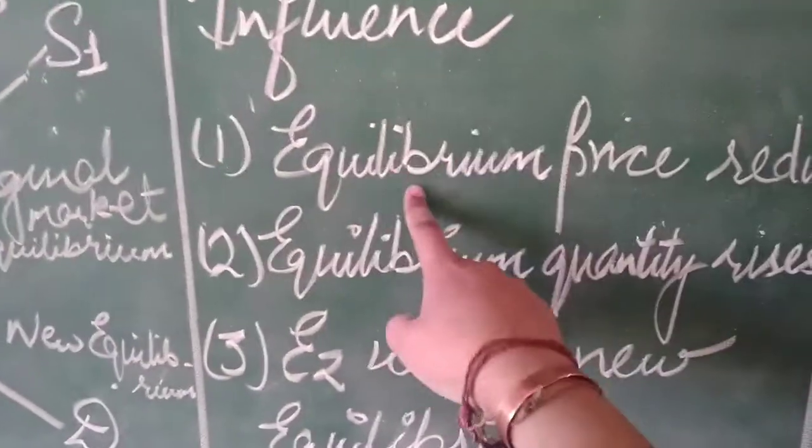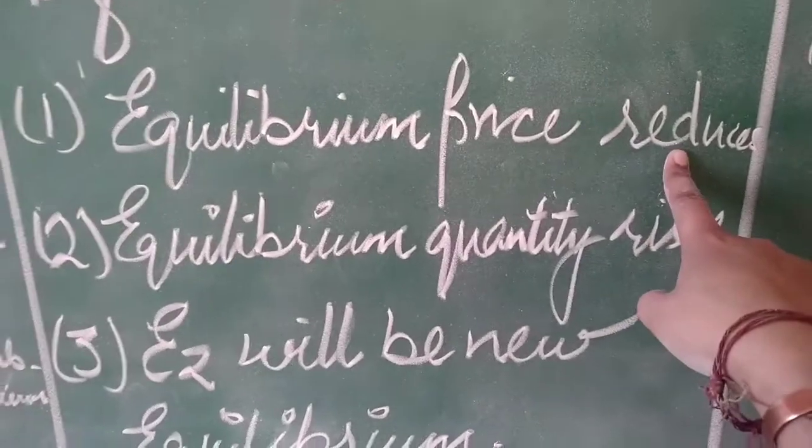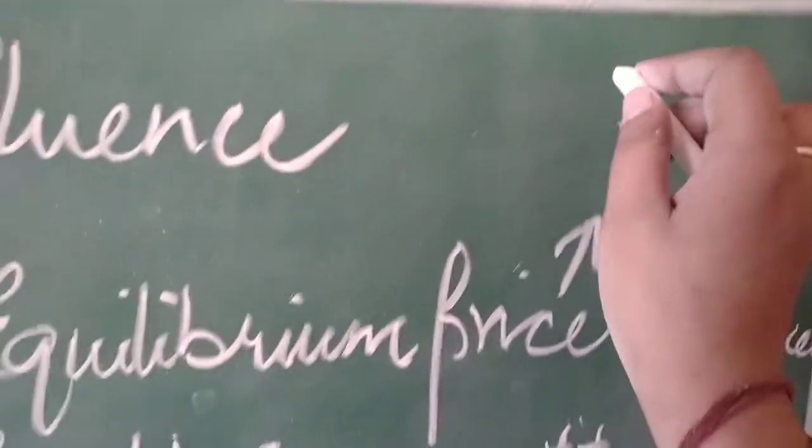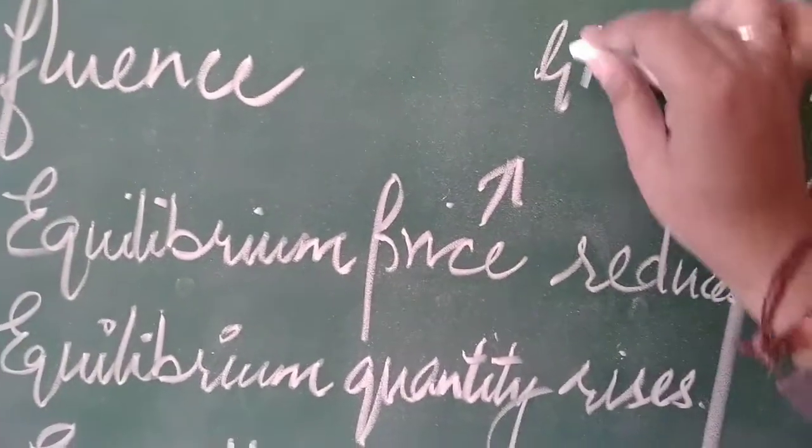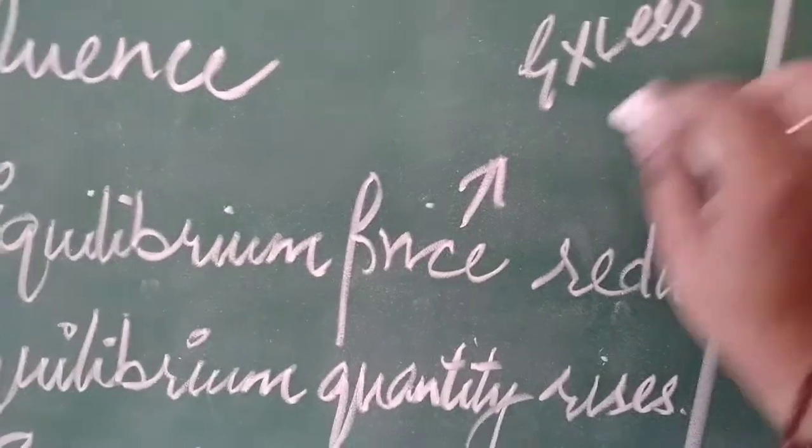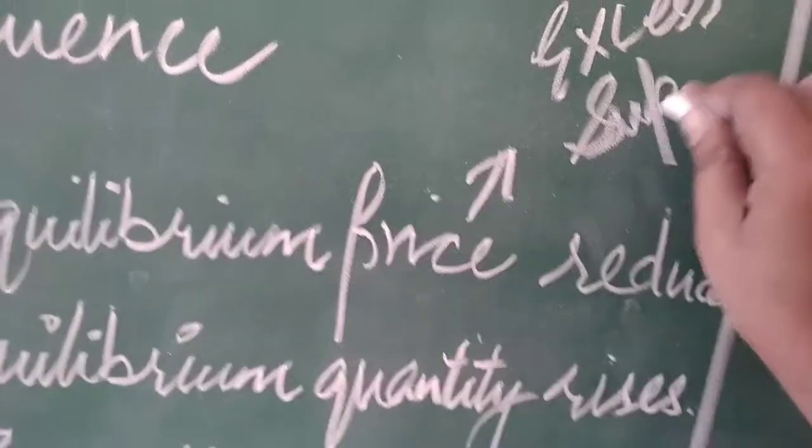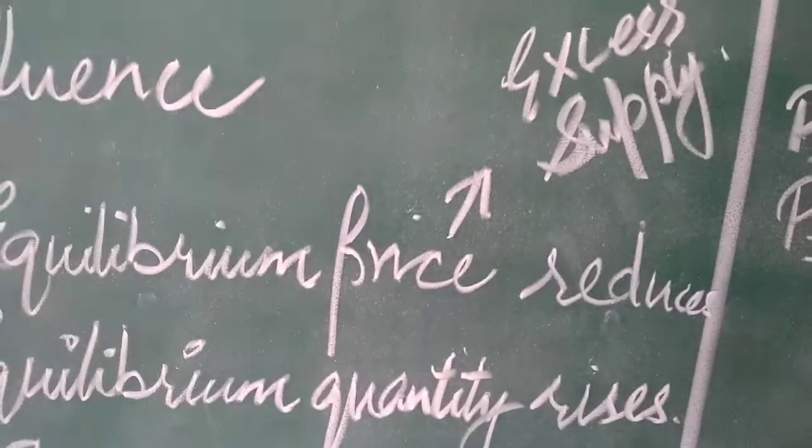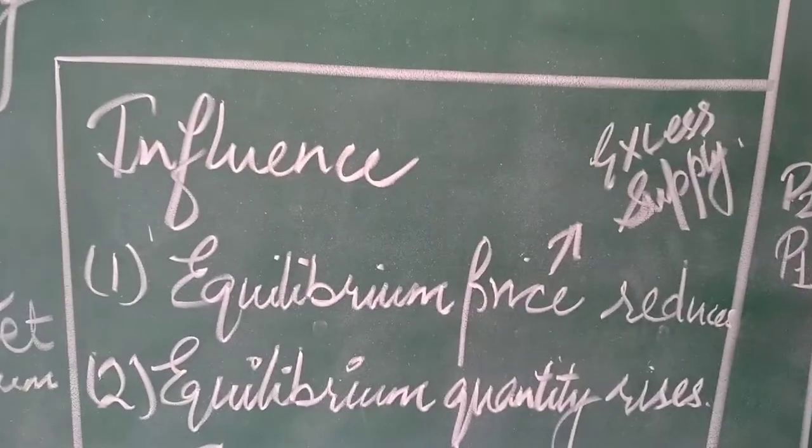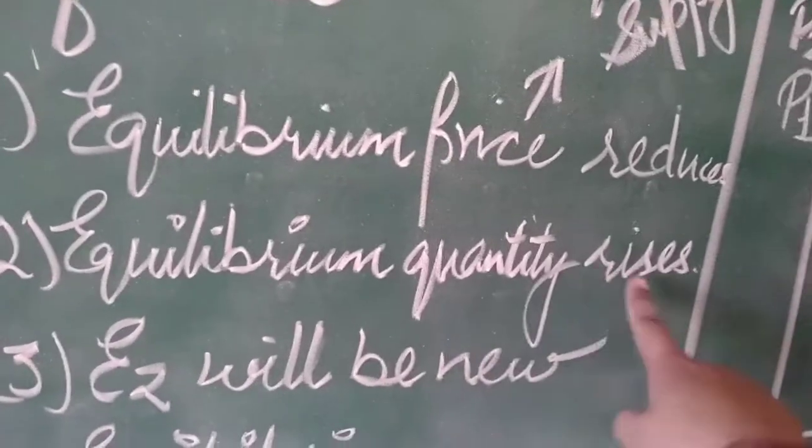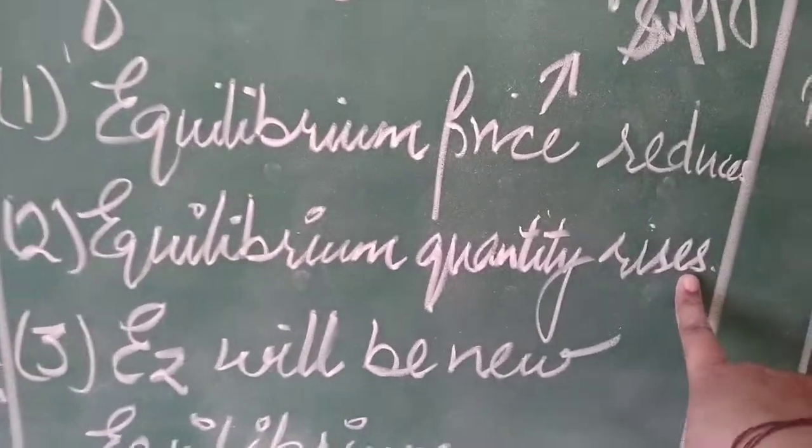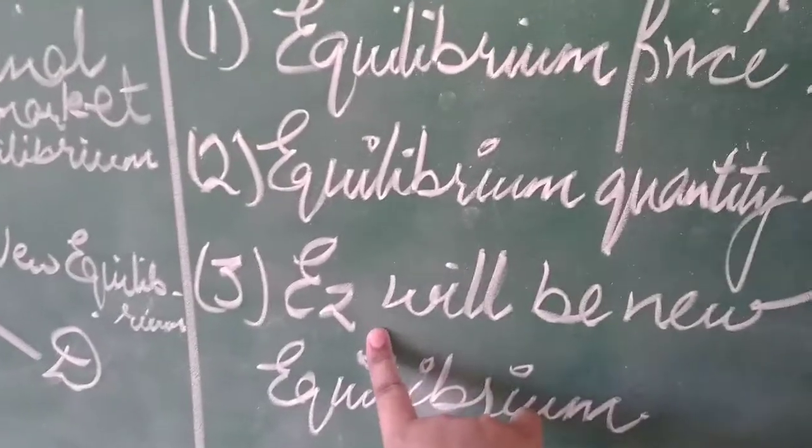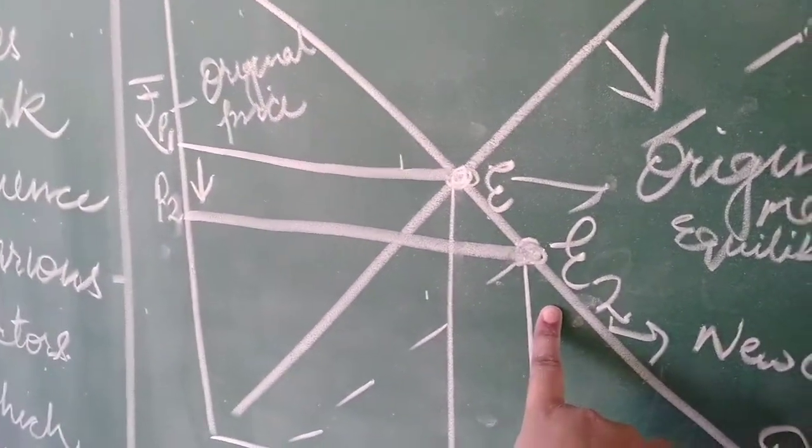This is written over here as the same one. Influence: equilibrium price reduces and quantity increases. Why are they reducing? They are reducing due to excess supply. And equilibrium quantity rises because excess supply hai, so price will reduce but supply quantity enhances. And E2 will emerge as new equilibrium because it is the new intersecting point of supply and demand.